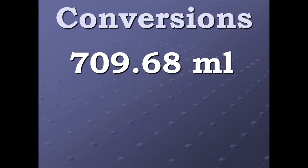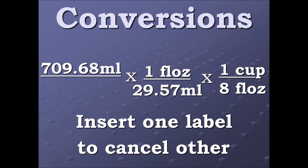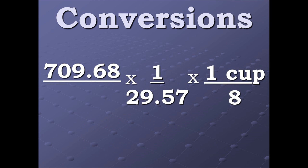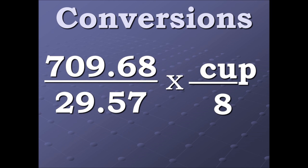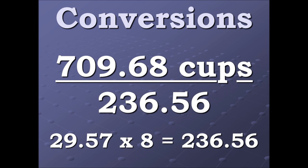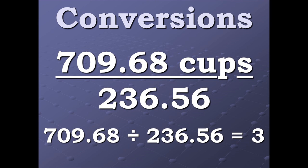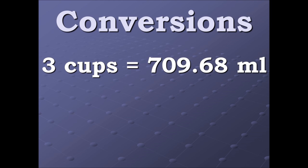Here we go working it out. We multiply in our conversion factors — again, what we're converting to is on top. We insert one label in order to cancel out the other label. Now we multiply, then divide, and this gives us three. Our final answer is three cups. So three cups equals 709.68 milliliters. Thanks.